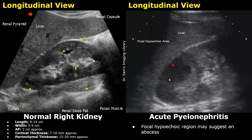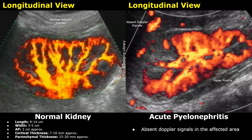In some cases there may be a focal hyperechoic region which may suggest early abscess formation. On color Doppler, this region will not show any internal flow — no color flow signals will be seen in an abscess. These images are taken with power Doppler applied. In the normal kidney we can see Doppler signals throughout.